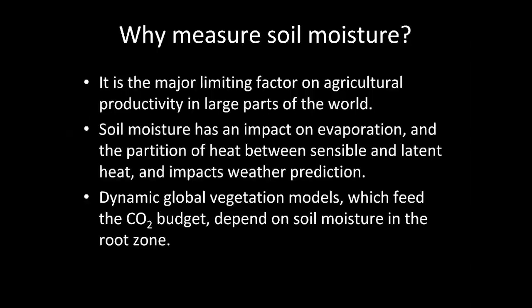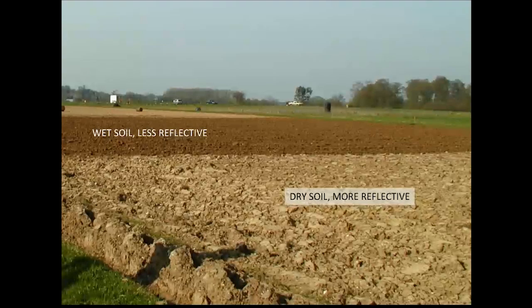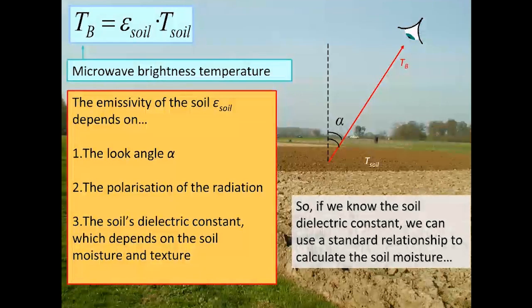Dynamic global vegetation models, flux models, and carbon budgets all depend on soil moisture and root zone to give more accurate outputs. When we look at microwave remote sensing, there's a very strong distinction between wet and dry: a wet soil is less reflective and a dry soil is more reflective. Wet soil has a dielectric constant of around 80 and dry soil around 4 — that large contrast allows us to determine whether something is wet or dry with microwave. Also, with microwaves, you can see through clouds, so during a hurricane or rain event we can tell if something is wet or dry.